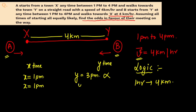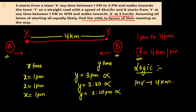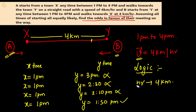Let's say A leaves at 1pm and B leaves at 2:30pm — again not possible, because at 2pm A will already reach Y. Similarly, A at 1pm and B at 2:10pm is also not possible. But if A leaves at 1pm and B leaves at 1:50pm, this is possible — A needs at least one hour to reach Y and B starts 10 minutes earlier, so they meet somewhere in between.